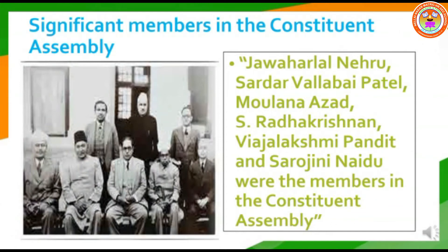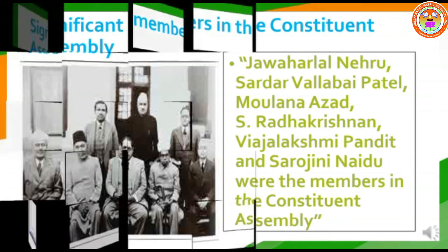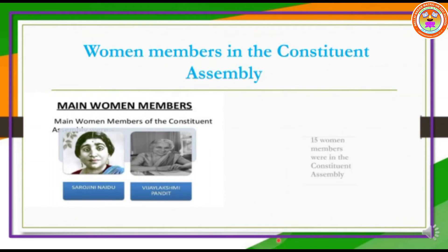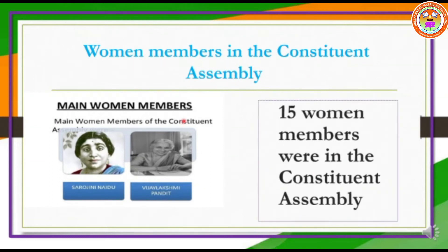Let us see who were the other significant members in the Constituent Assembly. This image shows the important members: Jawaharlal Nehru, Sardar Vallabhbhai Patel, Maulana Azad, S. Radhakrishnan, Vijay Lakshmi Pandit, and Sarojini Naidu. Regarding women members, Sarojini Naidu and Vijay Lakshmi Pandit were among the notable ones. There were 15 women members in the Constituent Assembly.